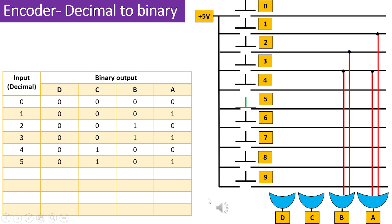In a similar fashion, when switch 5 is pressed, it activates the line on the opposite side of the switch, transmitting a logic 1. However, as the binary representation of decimal 5 is 0101 in a 4-bit format, the OR gates with their outputs labeled as input C and A are connected to the switch marked as 5. Consequently, when switch number 5 is pressed, the output changes to 0101.